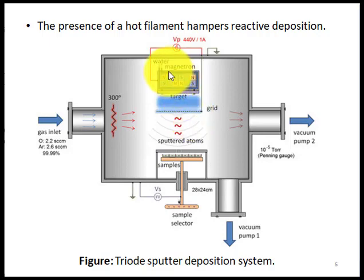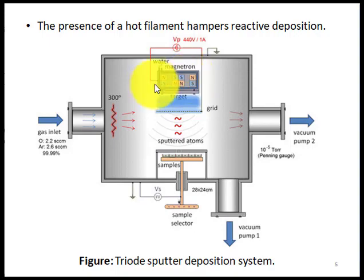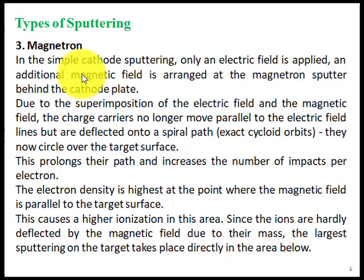In this diagram you can also see a magnetron — a magnet is attached here. So this technique is called triode magnetron sputtering. Next we will discuss magnetron sputtering and the magnetron or magnet in detail.